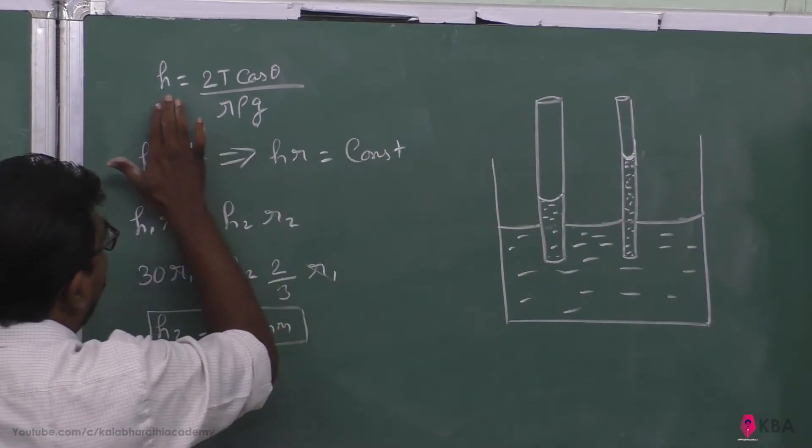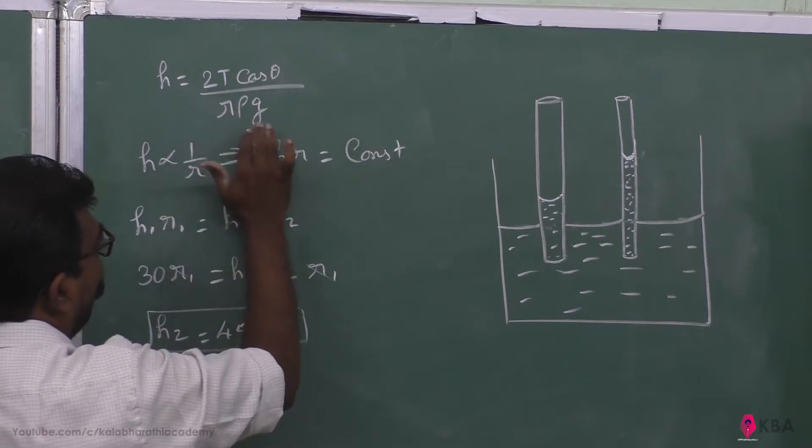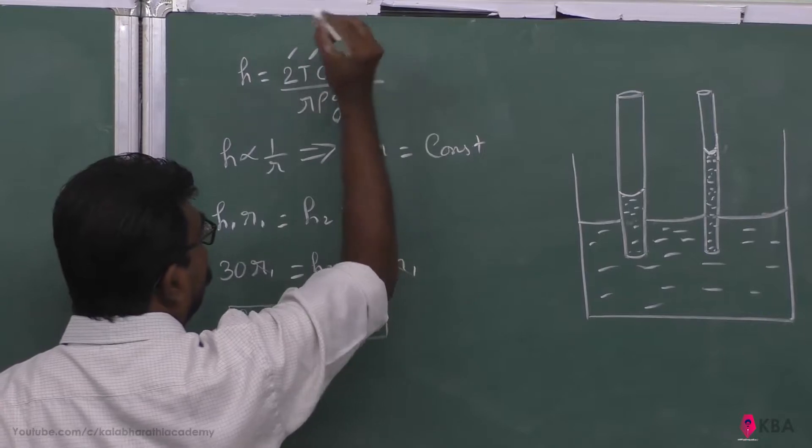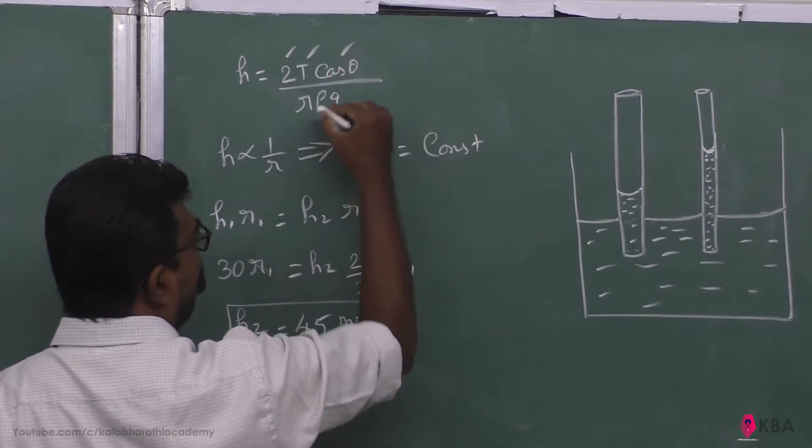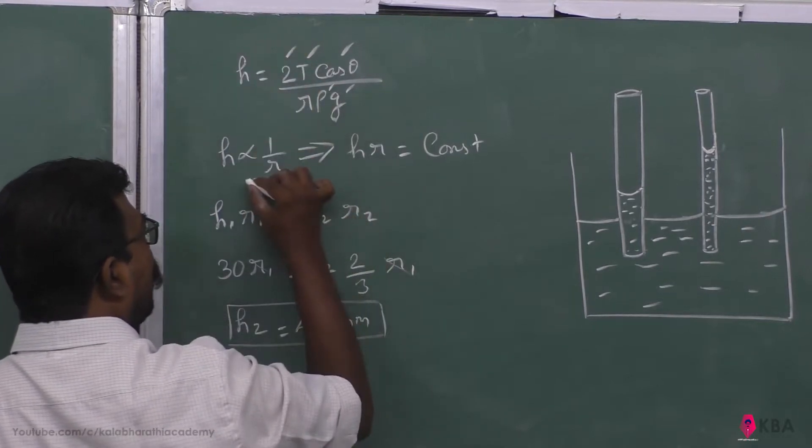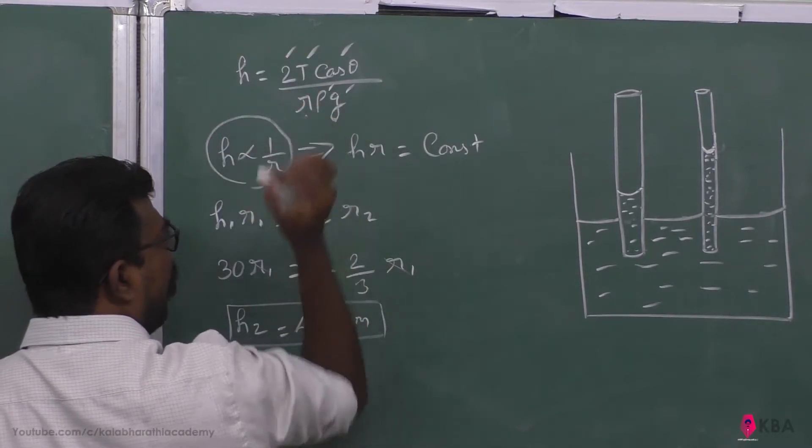The relation is governed by the expression h is equal to 2T cos theta divided by rho g r. Surface tension constant, cos theta constant, rho density constant, g gravity constant. So height is straightaway inversely proportional to radius.